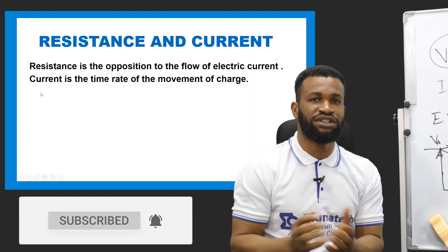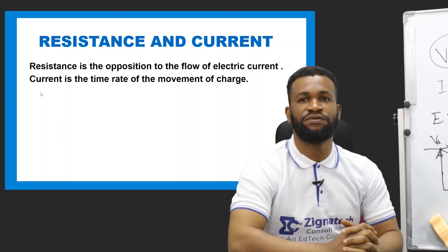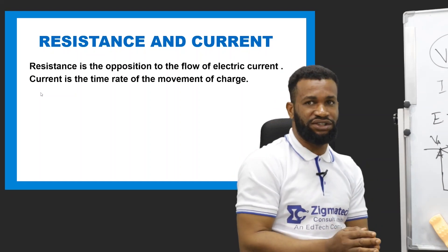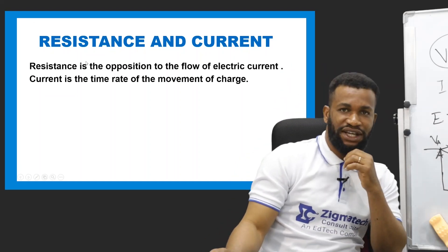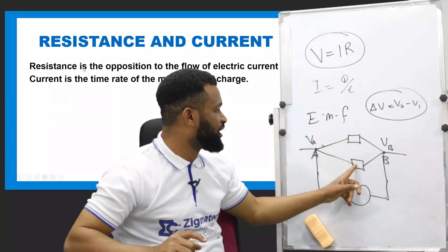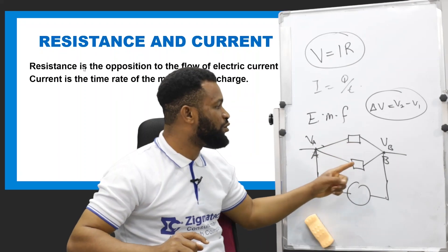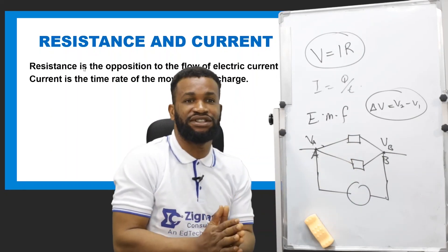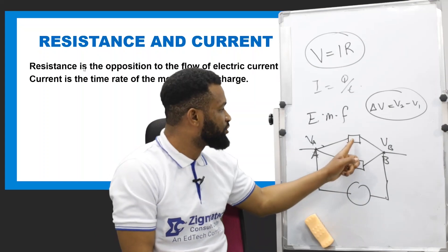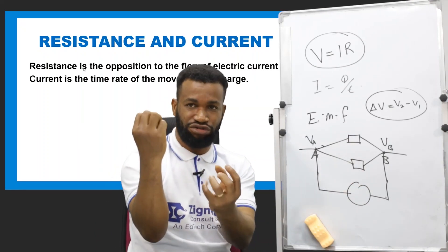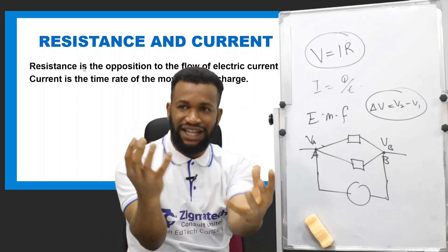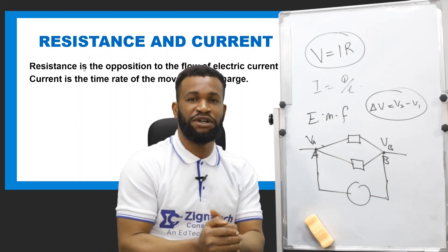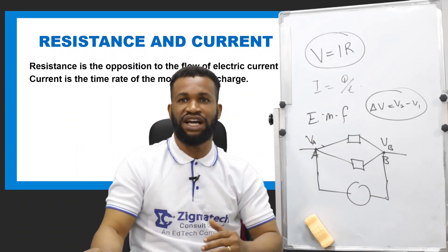When we talk about resistance and current: resistance is the opposition to the flow of electric current, while current is the time rate of movement of charge. Resistance is just a load in a circuit. They are the essence of why we have a circuit. If there is no load or resistance connected in the circuit, we say the circuit is a short circuit. Each resistance draws energy from the battery, taking some quantity of charge, which leads to a drop in the voltage or EMF of a battery.